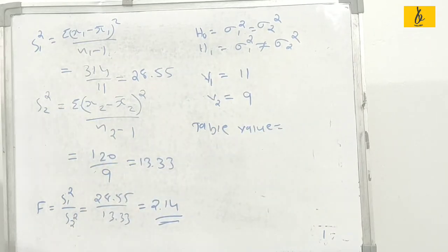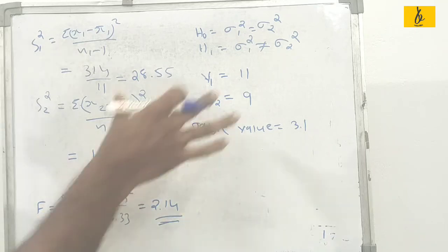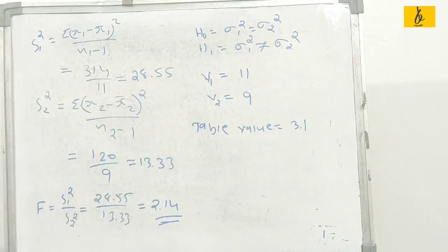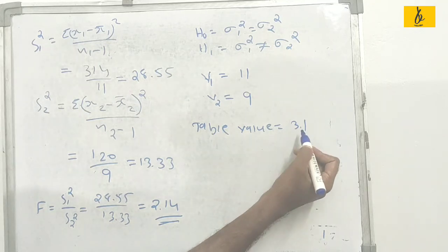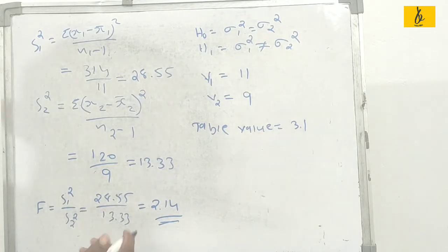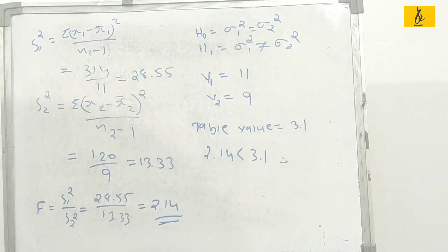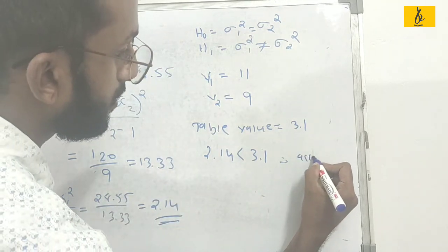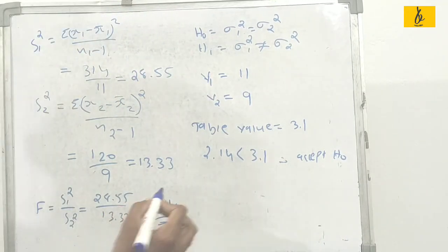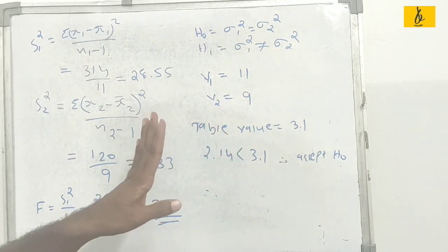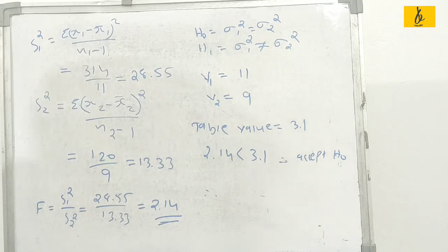Therefore the table value is equal to 3.1. The calculated value is 2.14, and 2.14 is less than 3.1. So we accept H0 — the significant difference is not established. The conclusion is there is no significant difference between the variances; the variance of the two populations is equal.